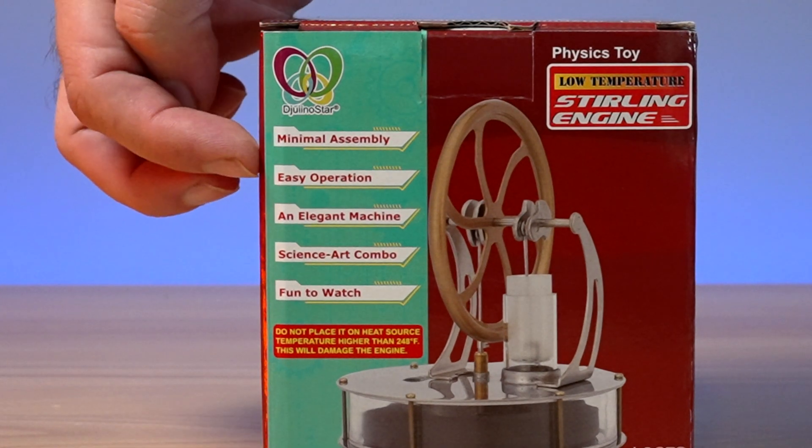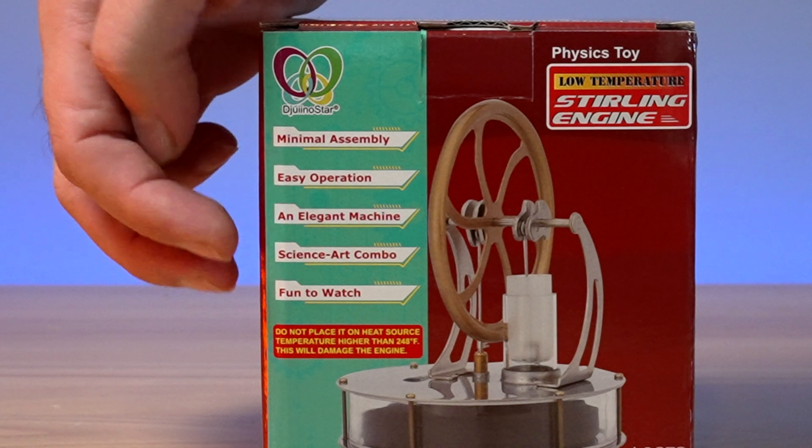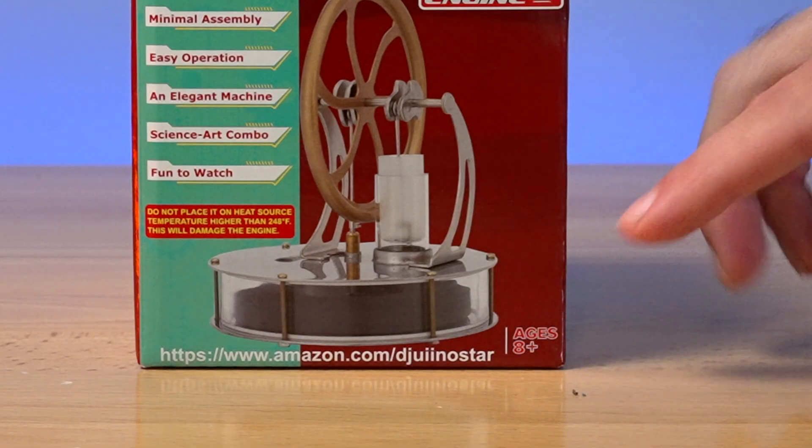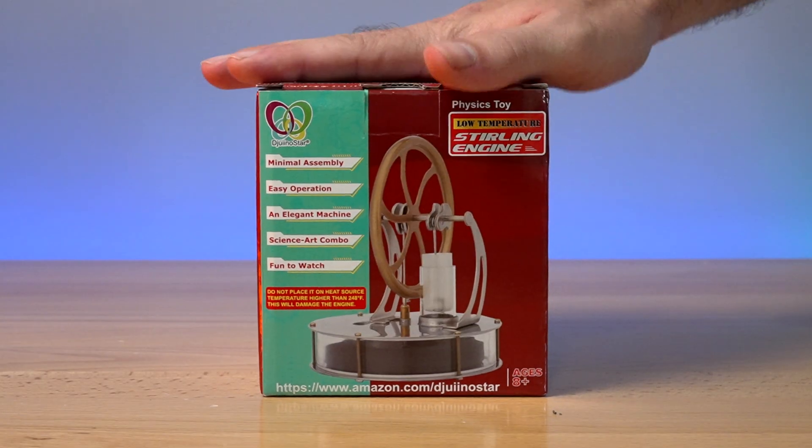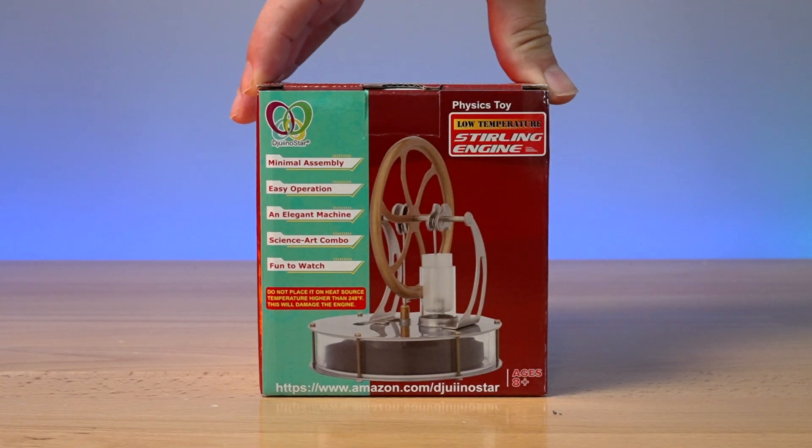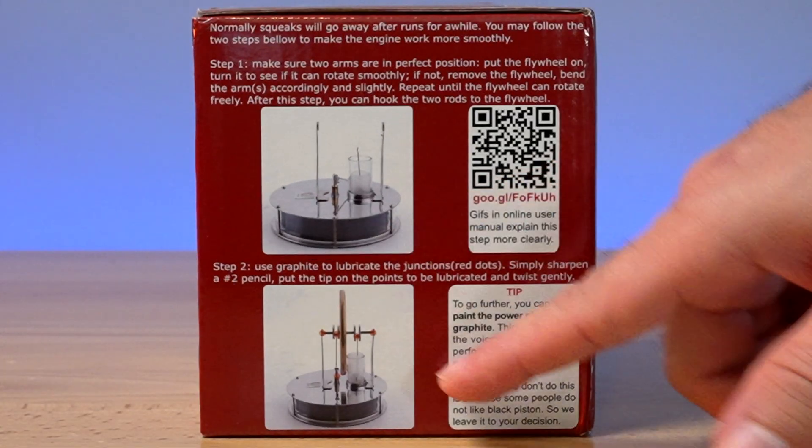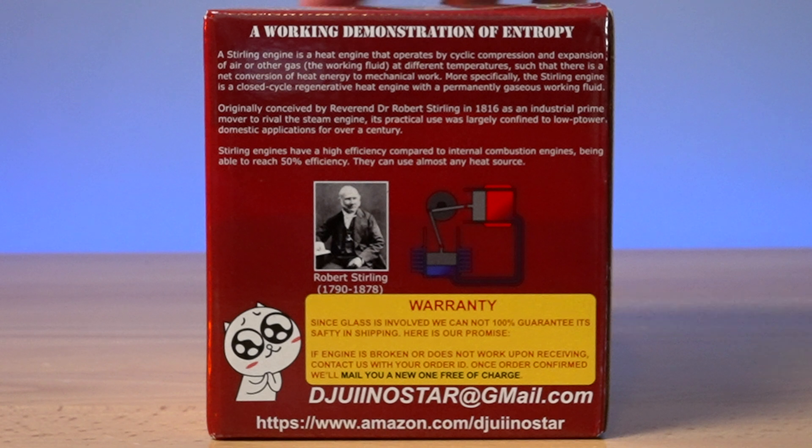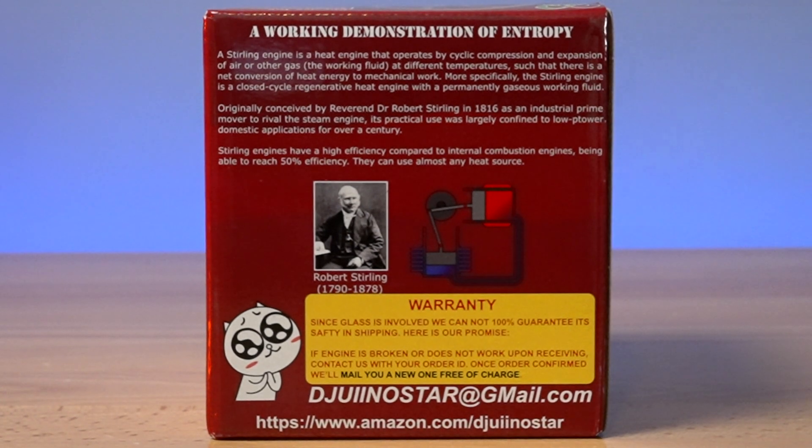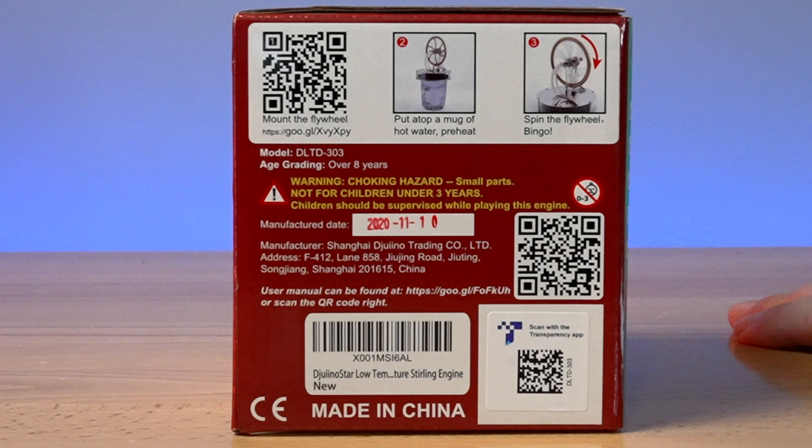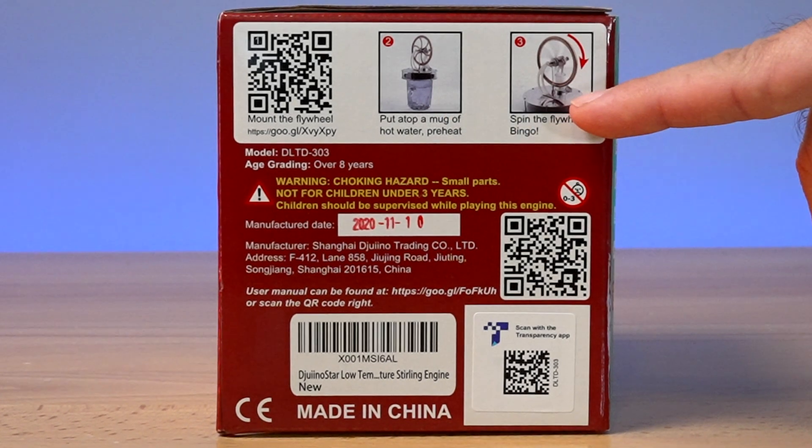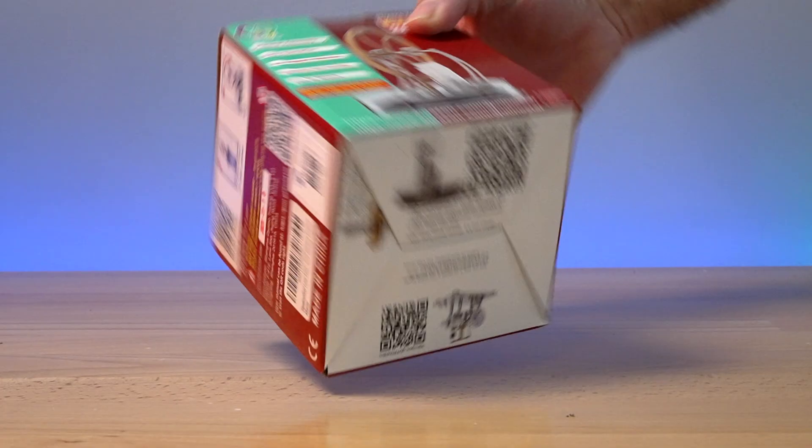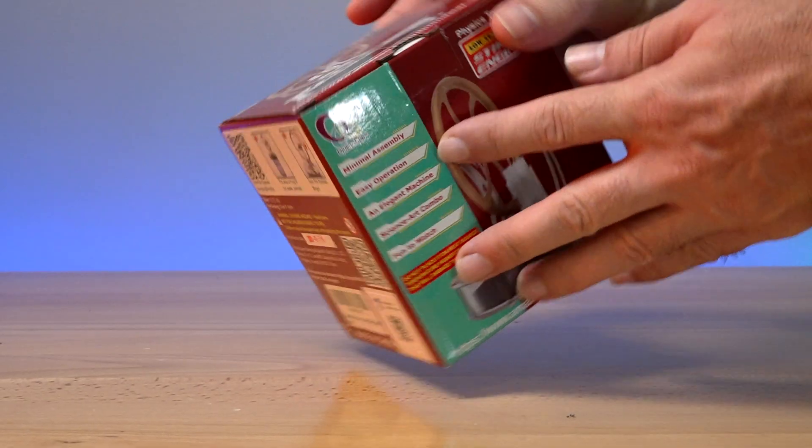So we've got minimal assembly, easy to operate, an elegant machine, science art combo, and fun to watch. So you guys can see this is for ages eight plus, so this could be quite interesting for a pretty wide range of children and adults. Here has some information about the operation and maintenance. On the back we have a little history of the sterling engine and its inventor and how it works. A little quick instructions here on how to operate it, which is very simple. You just need a cup of hot water. And that's pretty much it. So let's go ahead and open it up.